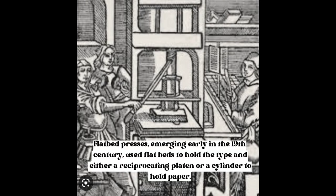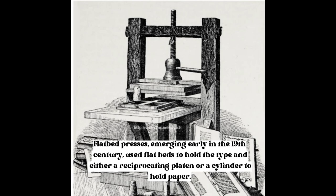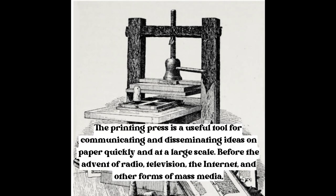Flatbed presses, emerging early in the 19th century, used flatbeds to hold the type in either a reciprocating platen or a cylinder to hold paper. The printing press is a useful tool for communicating and disseminating ideas on paper quickly and at a large scale.